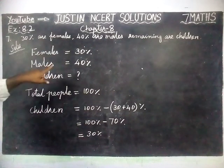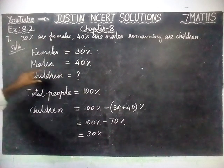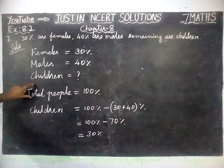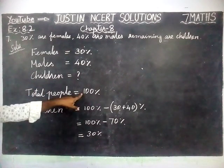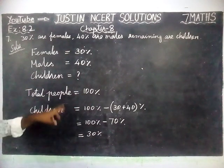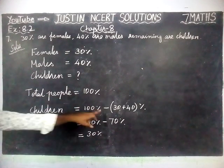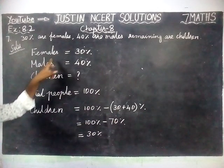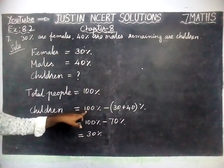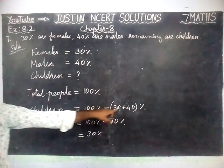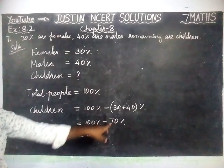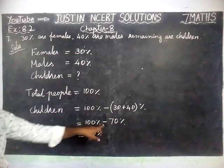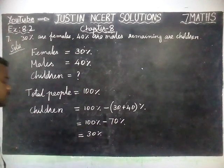To recap: female is 30%, male is 40%, and children we have to find. Total population is considered as 100%. So children is equal to total minus female minus male: 100 minus (30 + 40) equals 70%, and 100 minus 70 is equal to 30%.